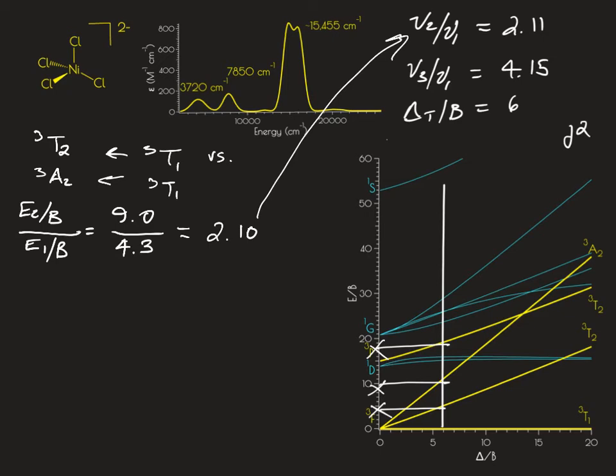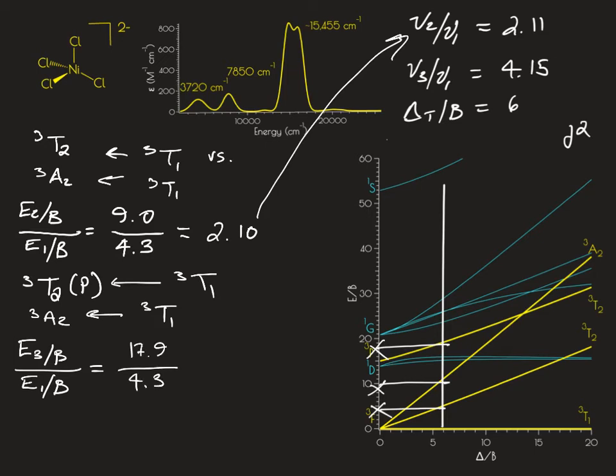Comparing the triplet T2 originating from that P term, that excited state originating from our ground state relative to the lowest energy transition, we get an E3 over B and an E1 over B. This is equal to 17.9 over 4.3, which equals 4.16, which is also very close to what we calculated before.